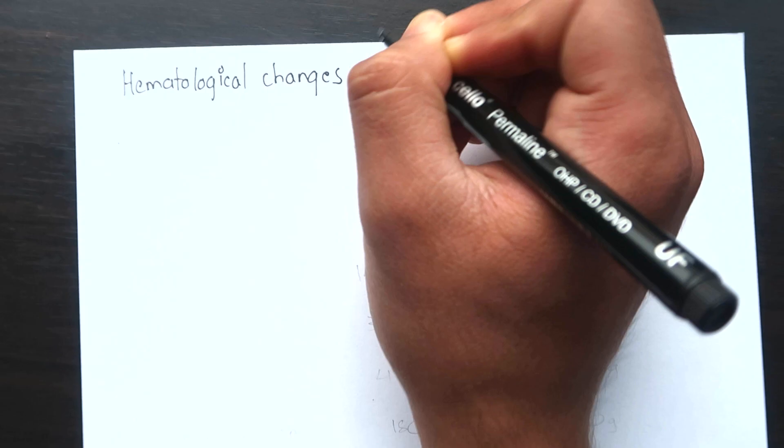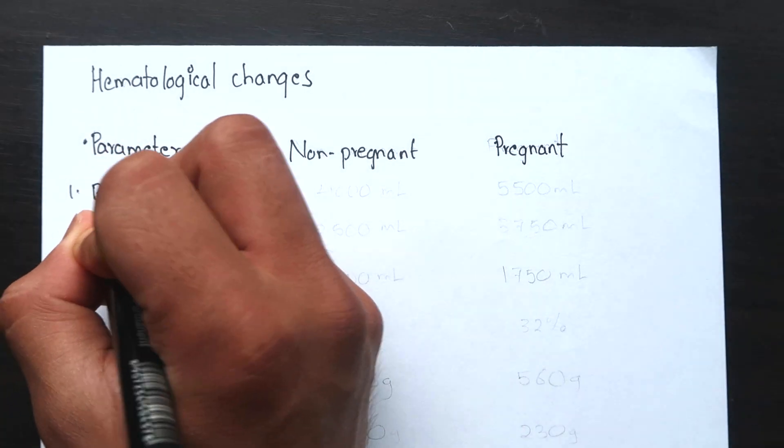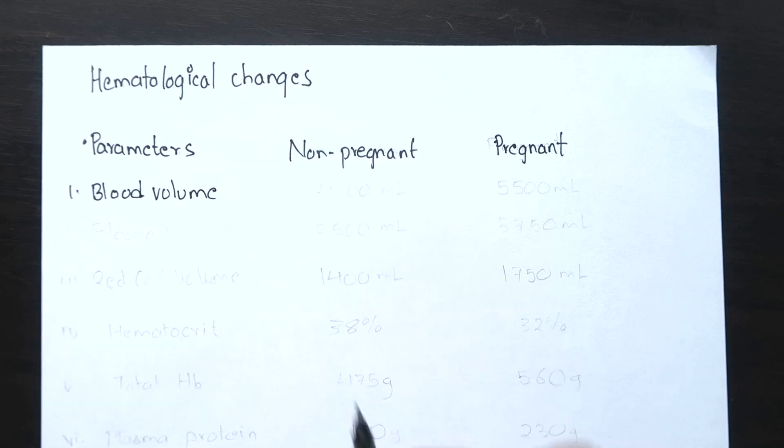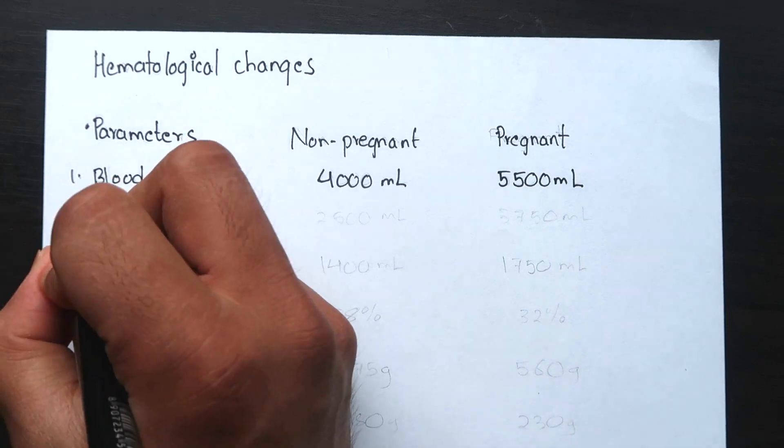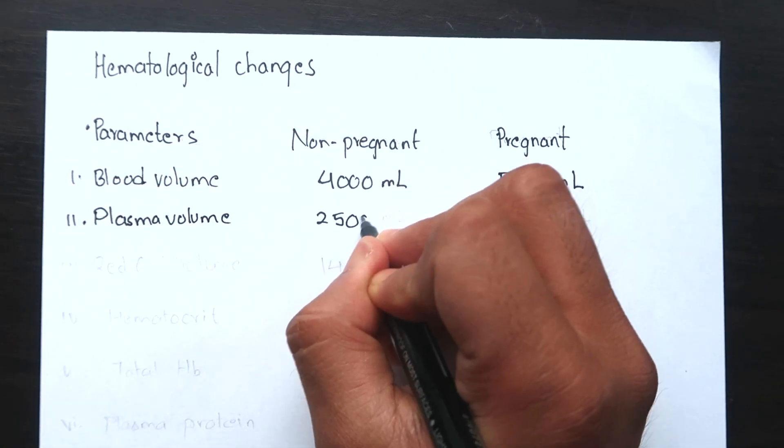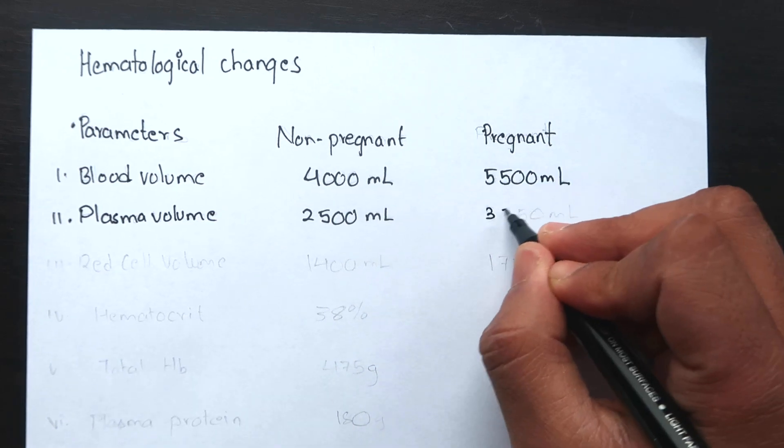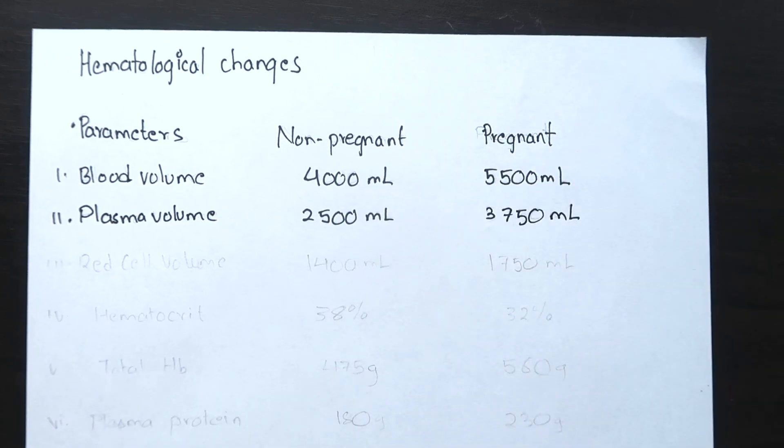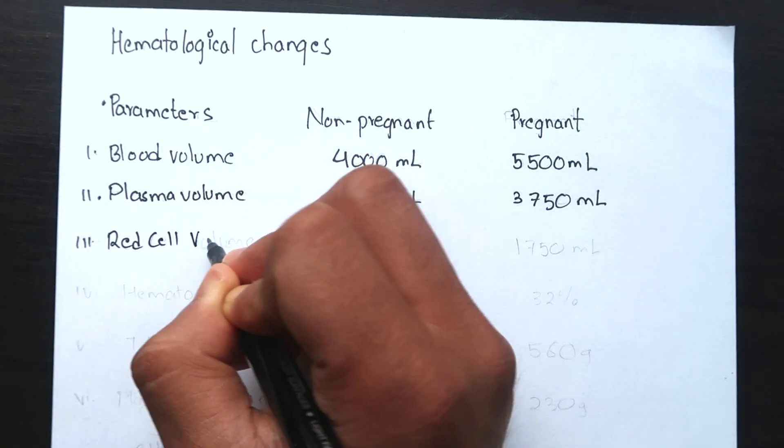Now about the hematological changes. Blood volume is markedly raised during pregnancy from 4000 ml to 5500 ml. Plasma volume starts to increase from 2500 ml to 3750 ml. The rate of increase is almost parallel to that of blood volume. The total increase in red cell volume is about 350 ml.